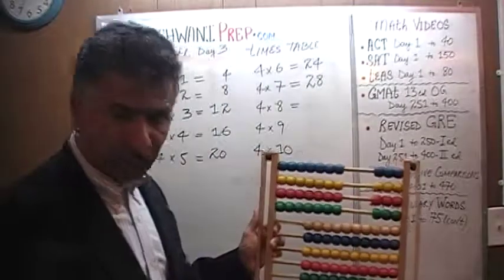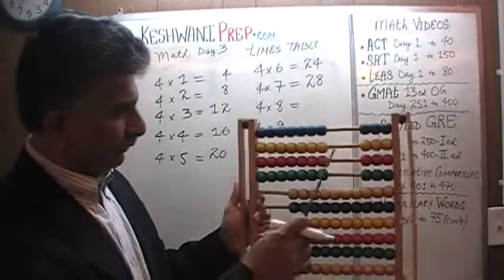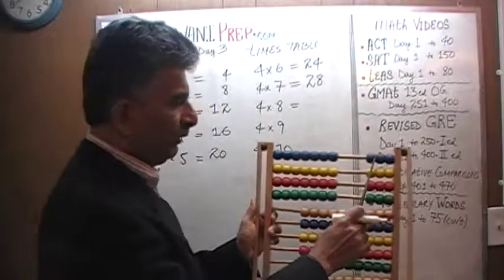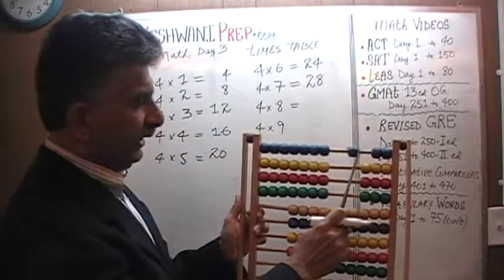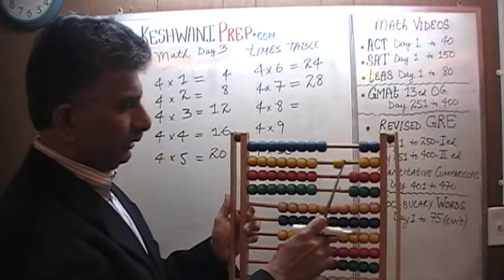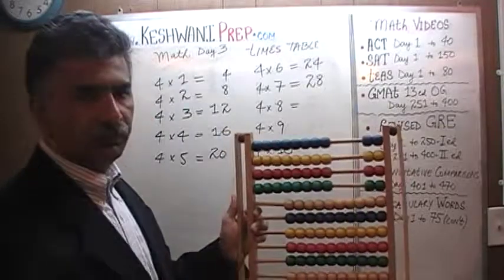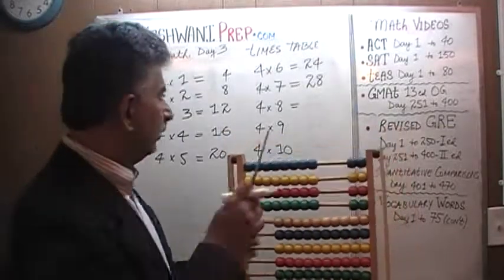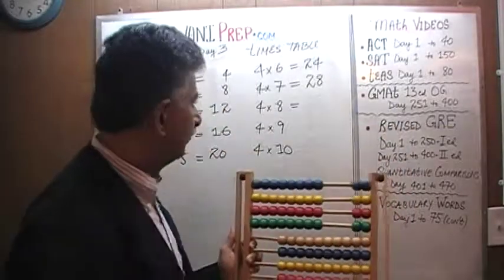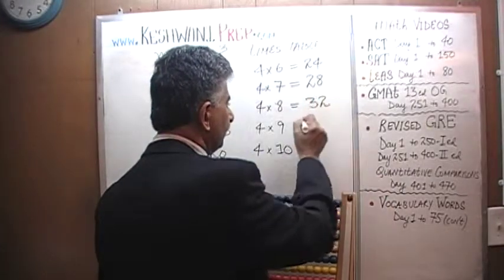What about four eights? Up to here is twenty-eight. Now we add one more to each group to get eight in each, so that's twenty-nine, thirty, thirty-one, thirty-two. Four eights are thirty-two.